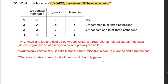Question 38: What do pathogens of HIV, malaria, and TB have in common? HIV and the malaria pathogen are non-cellular and have no cell organelles, so viruses do not have ribosomes or cell surface membranes. Since the question asks what is common to all three, there must be a cross under cell surface membrane and ribosomes. All three do have genes — viruses consist of genetic material (DNA or RNA) and a protein coat. The answer is D.